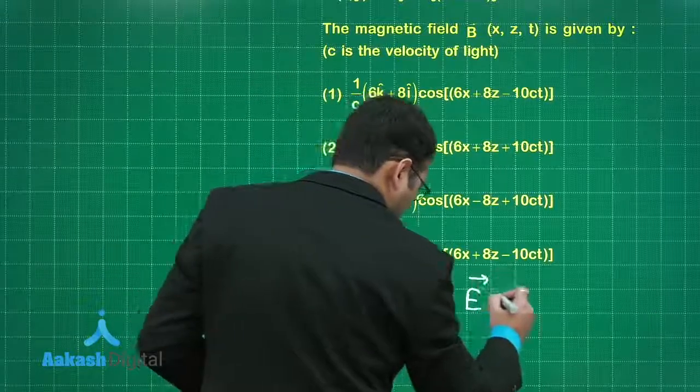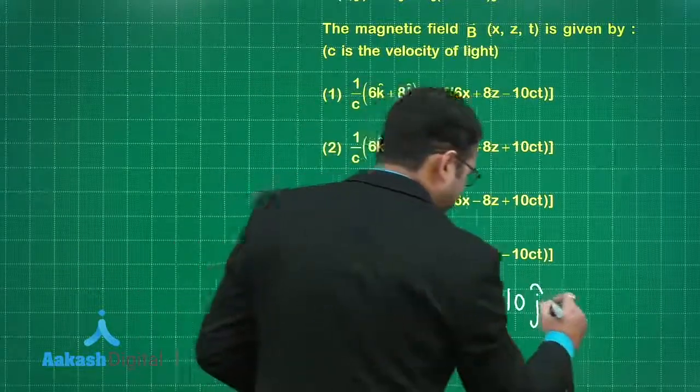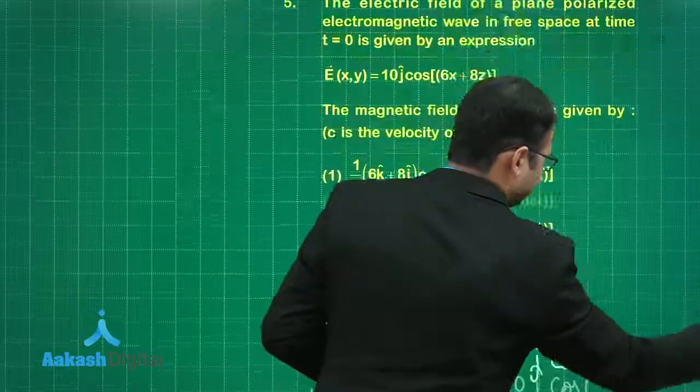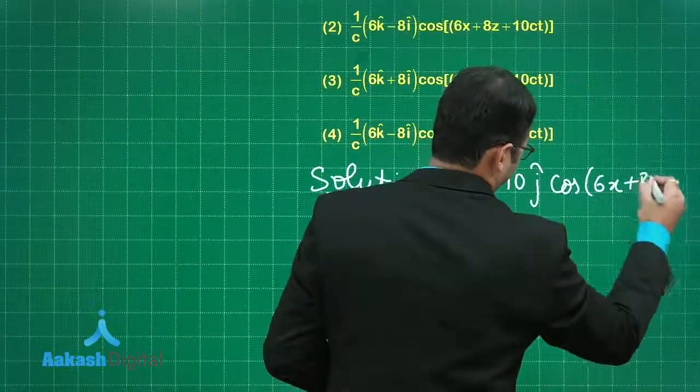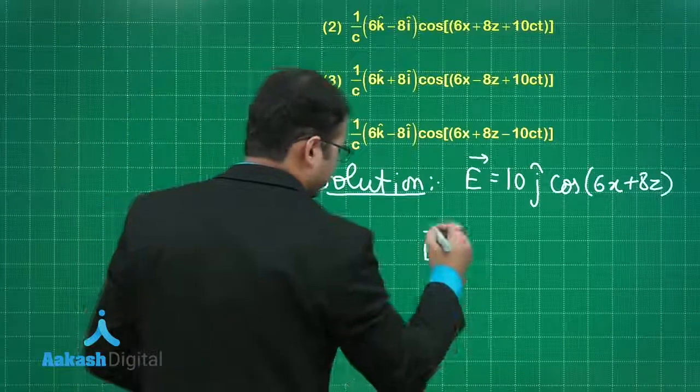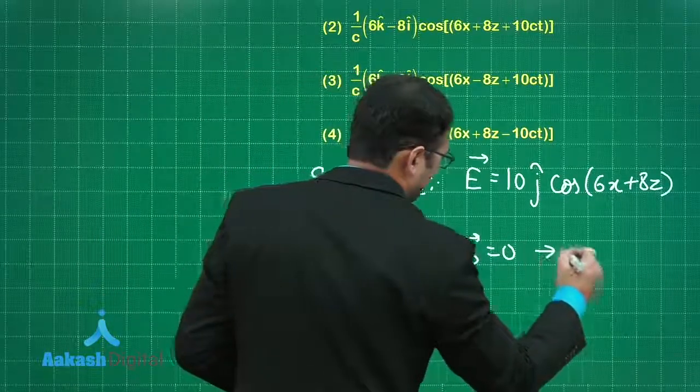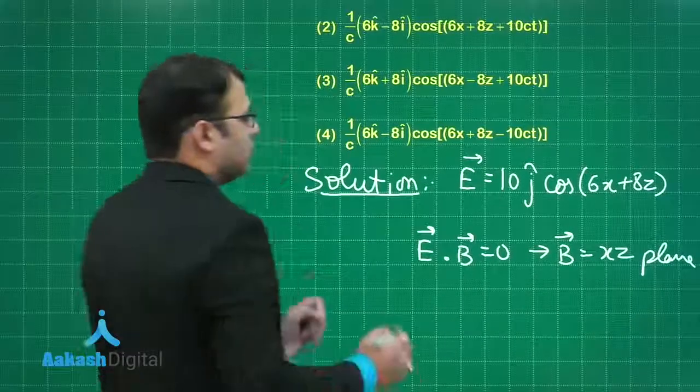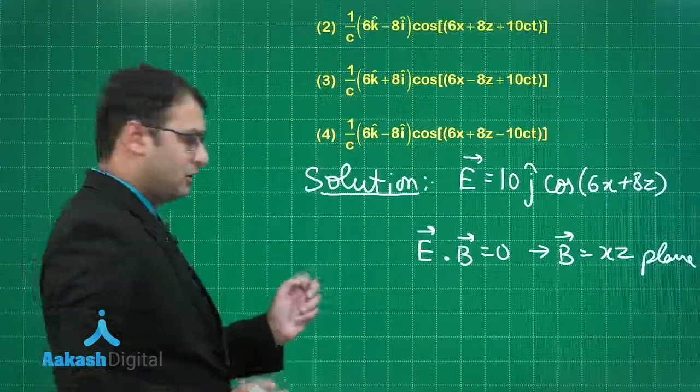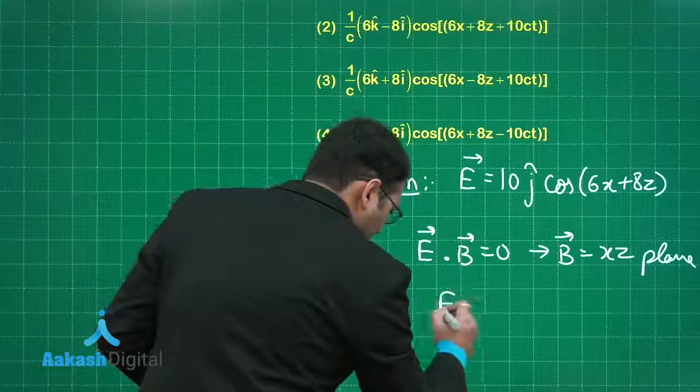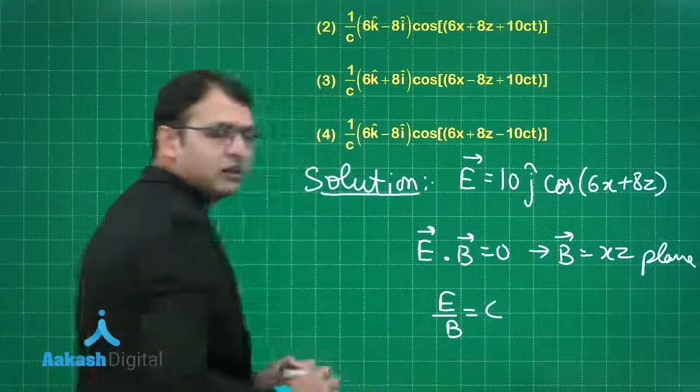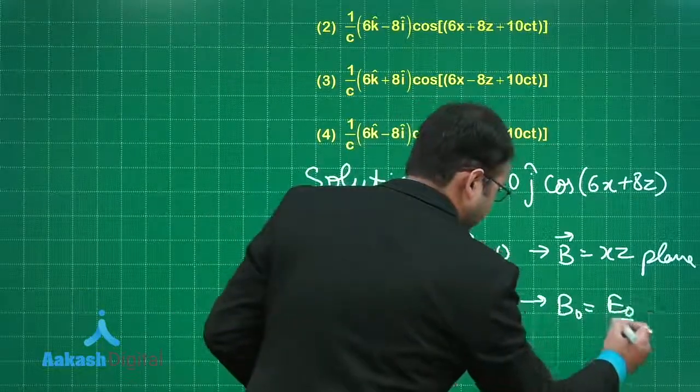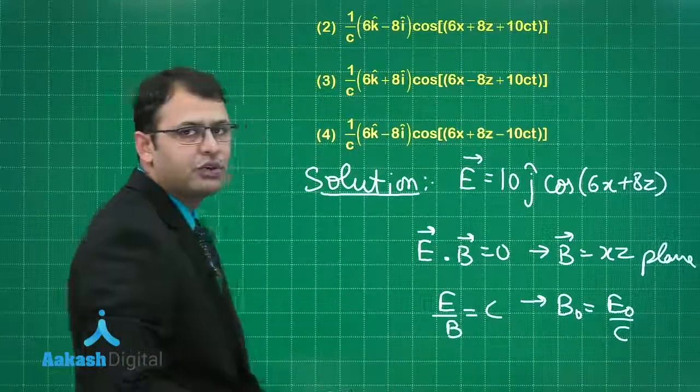Electric field is given to us. The important thing is electric field dot product with magnetic field should be 0. This implies that magnetic field will be in xz plane. We have to understand that E by B would be equal to C. From here you will get B0 equals E0 by C. The magnitude of E0 is 10.